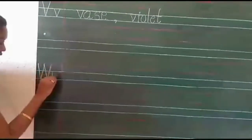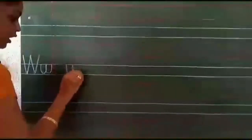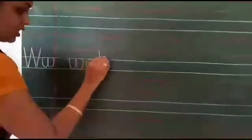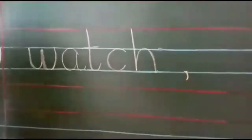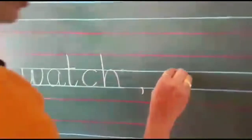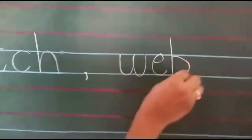Now, leave a line and write capital letter W, script letter W. W for watch, W for web, W for wood. So we will write W for watch: W, A, T, C, H — watch. Comma. W for web: W, E, B — web.